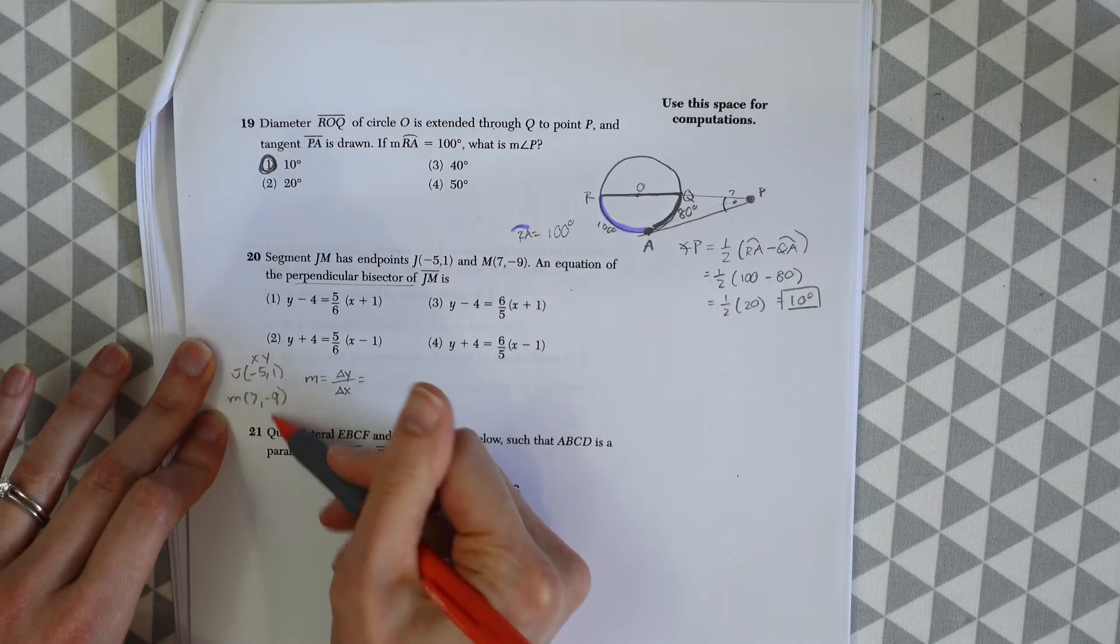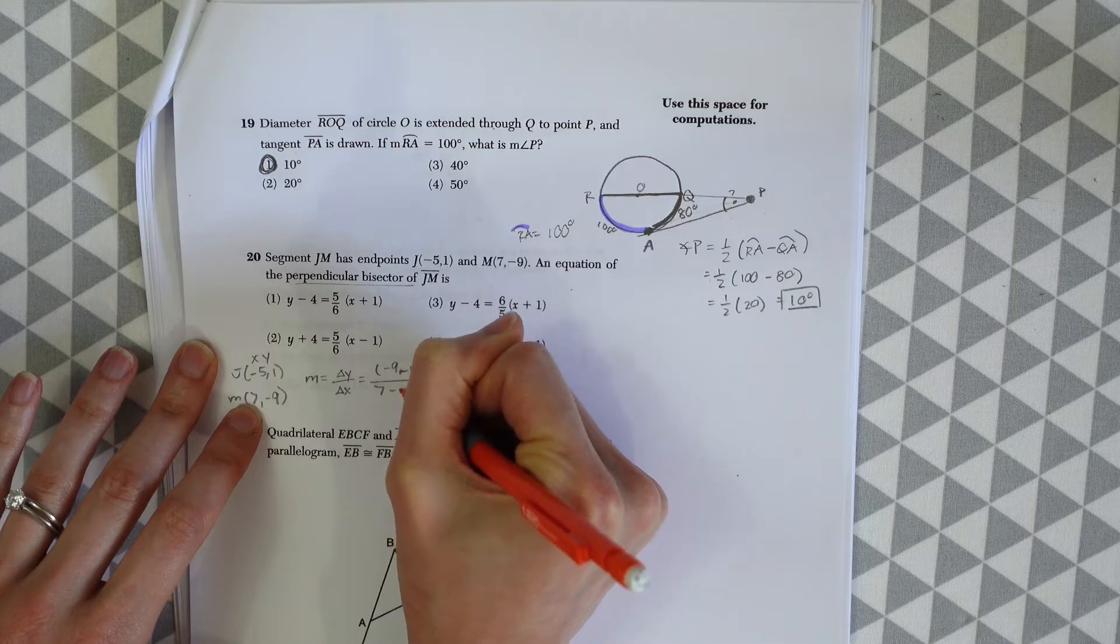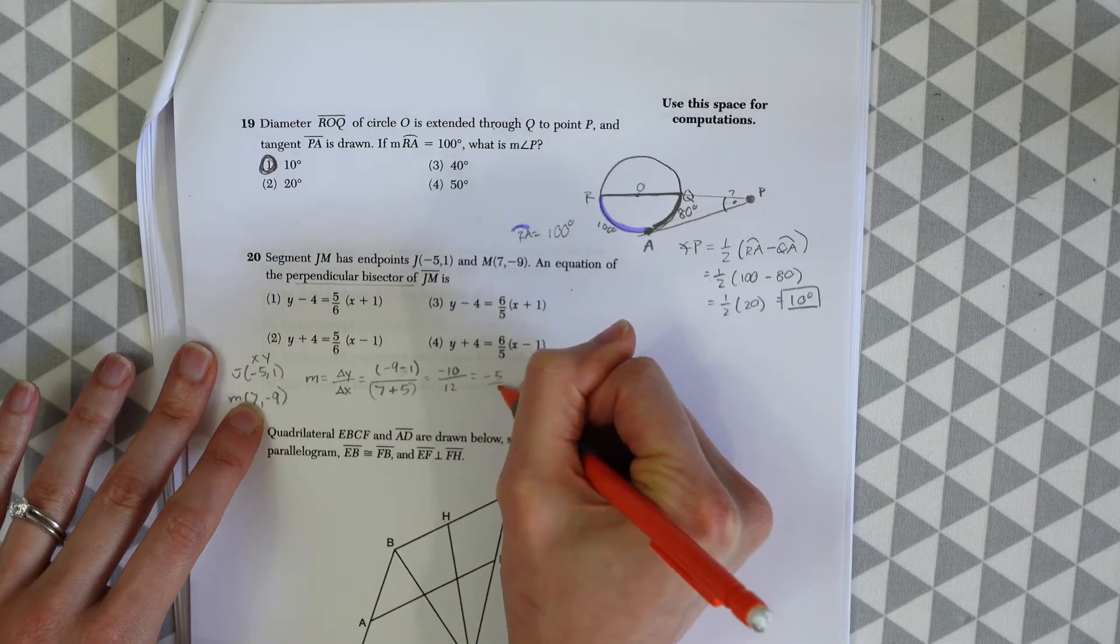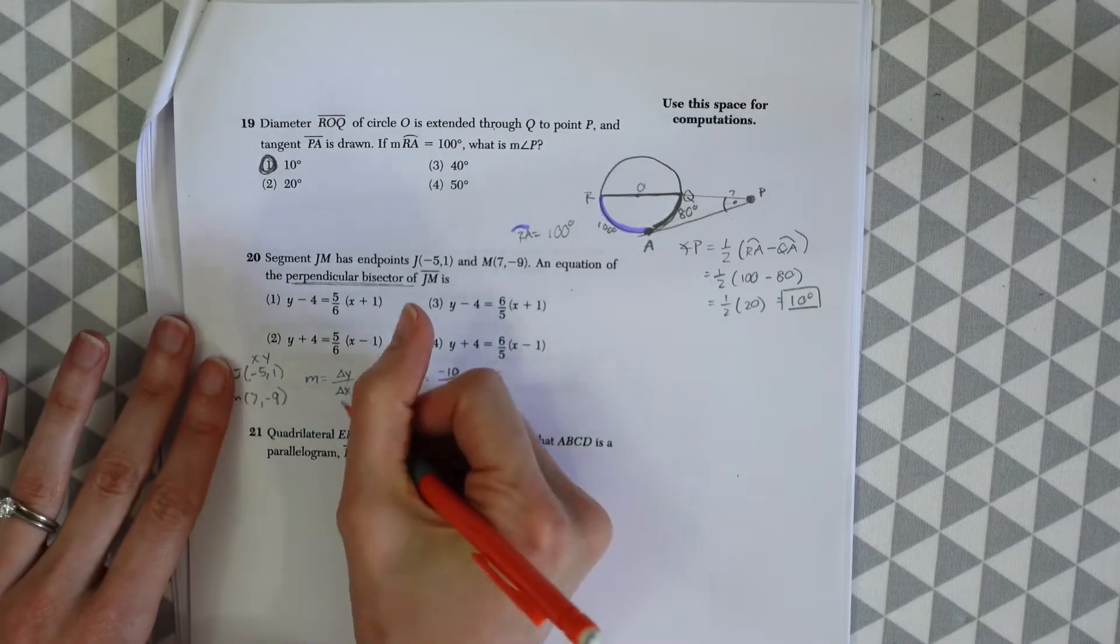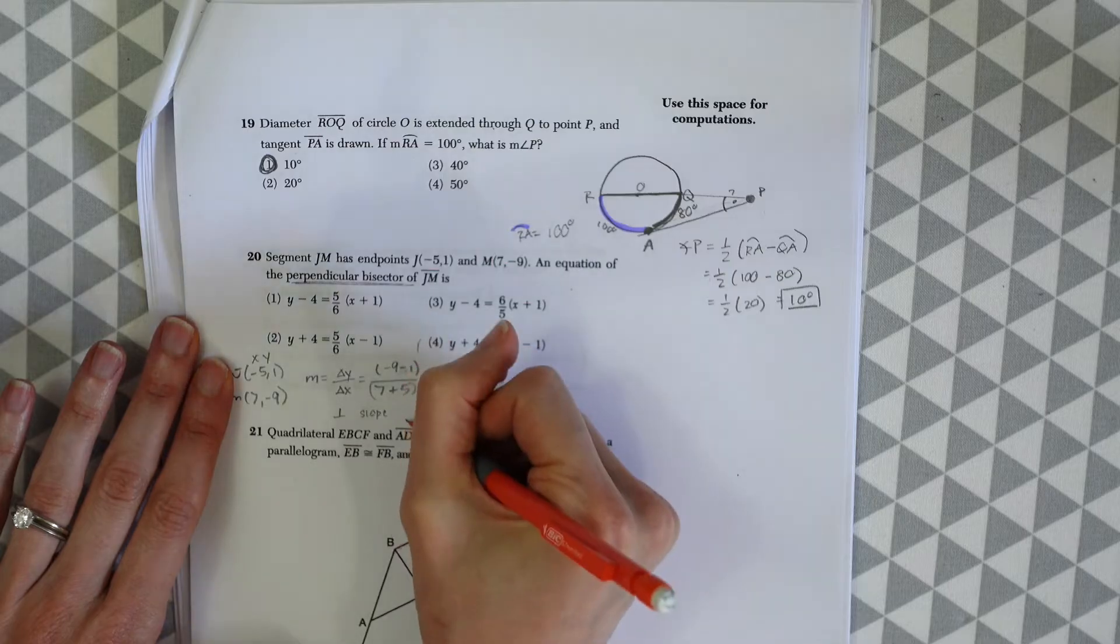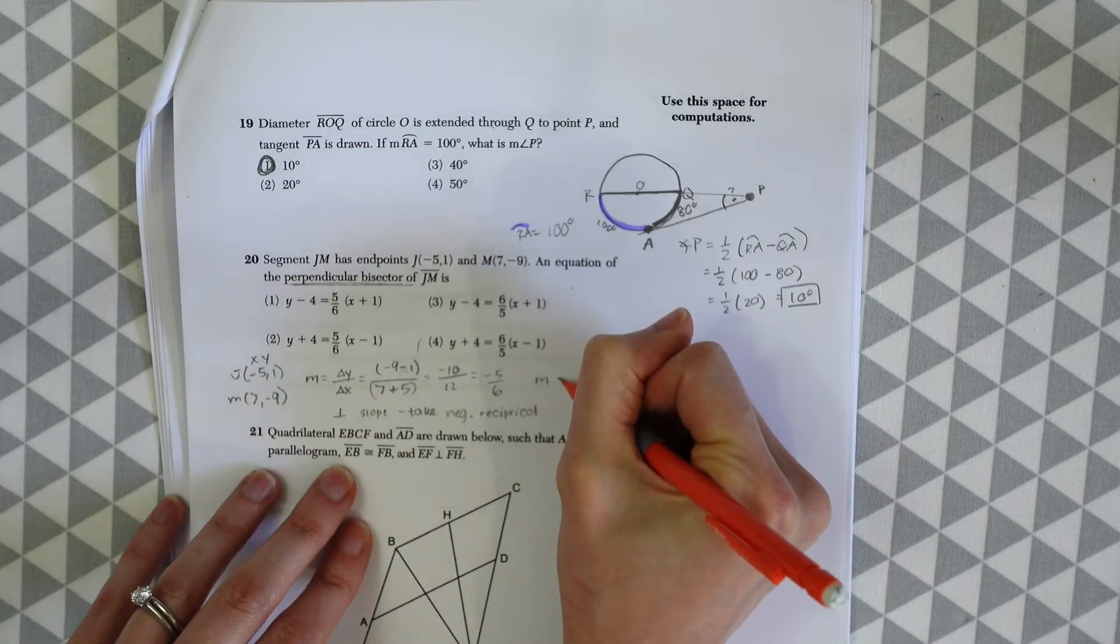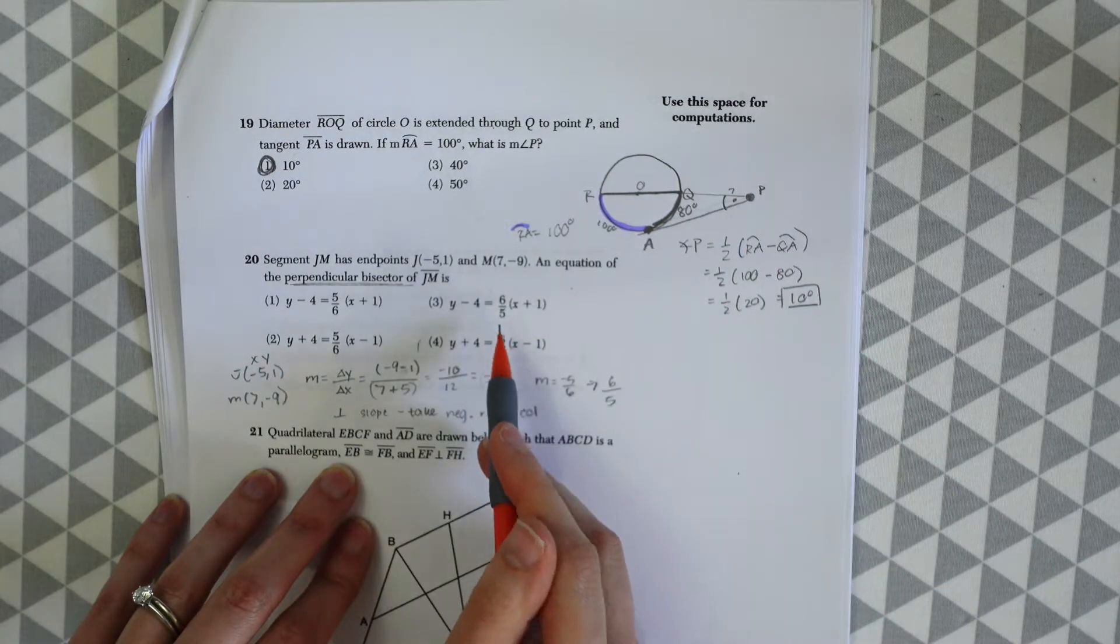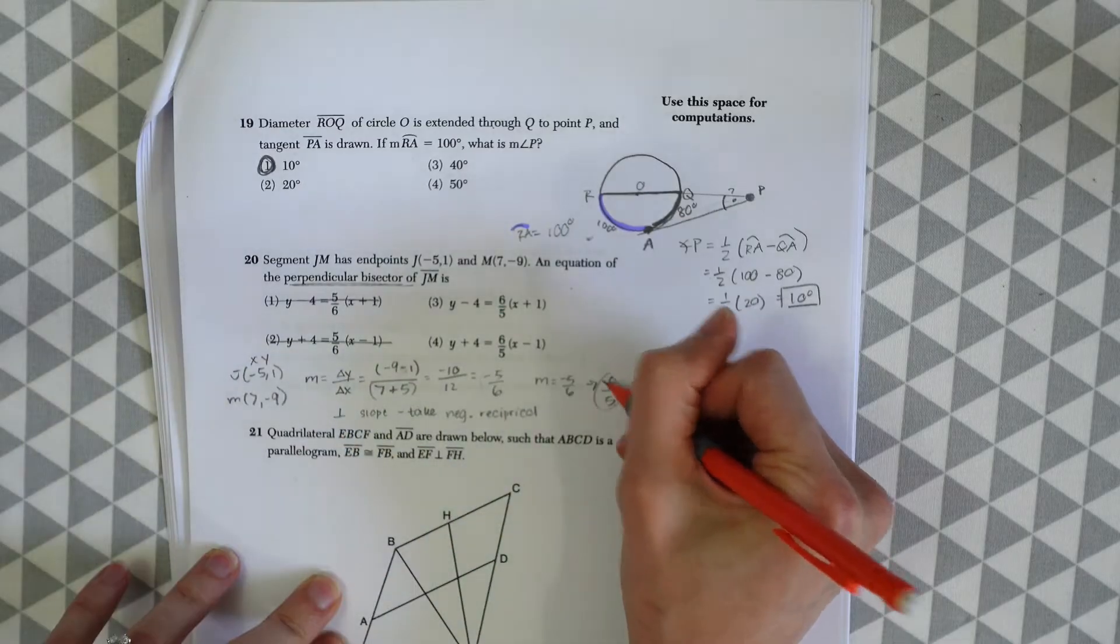Because this is a perpendicular bisector, it's perpendicular to JM. With perpendicular lines, we take the negative reciprocal of the original slope - flip and negate it. So M equals -5/6 becomes 6/5. Looking at our answer choices, we see 6/5 for two of them, so we can already eliminate choices 1 and 2.